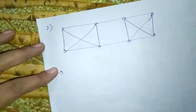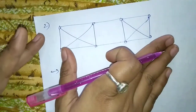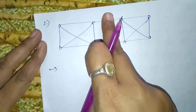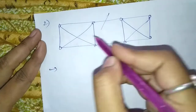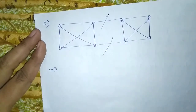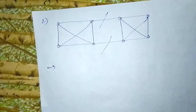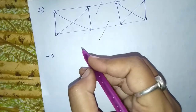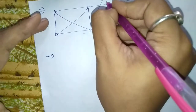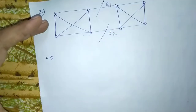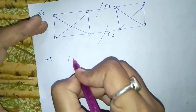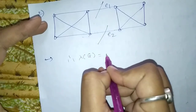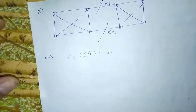Now, consider this second example graph. You can see that if we delete these two edges we can get a disconnected graph — when we delete this edge and this edge. So, edge connectivity of this graph is 2, because here we delete two edges. Removal of minimum two edges E1 and E2 is required to disconnect the graph. Therefore, lambda of G is equal to 2.